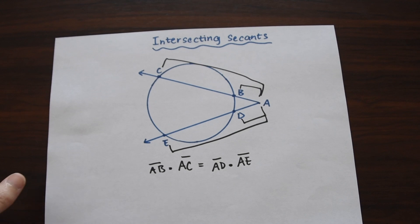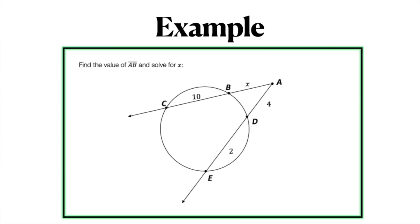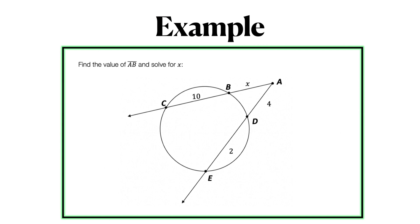So let's see how we can apply this theorem to a question. We have our question: given AD equals 4, AE equals 2, and BC equals 10, find the value of AB, find the value of this X right here, this missing value.